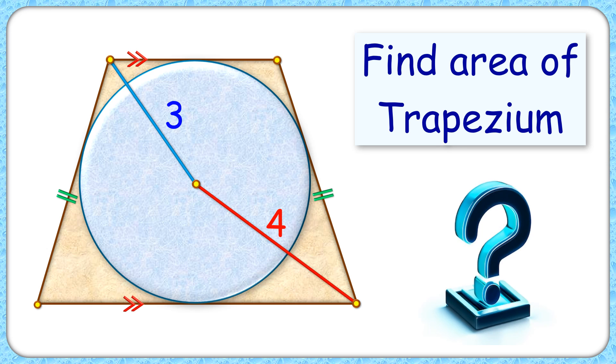In this interesting question, we have a circle inside an isosceles trapezium. The distance of opposite vertices from the center of circle is 3 cm and 4 cm. The exciting part is with this limited data, we have to find the area of trapezium.